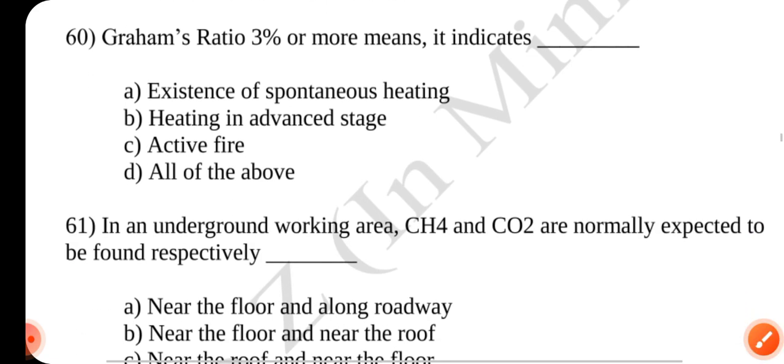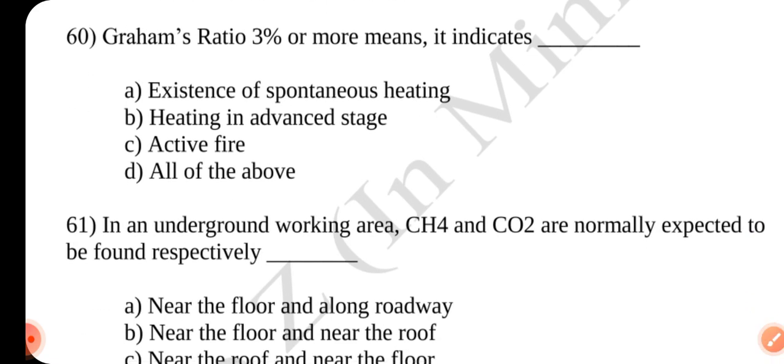Question number 60. Graham's ratio 3% or more means it indicates dash. Answer is C. Active fire.